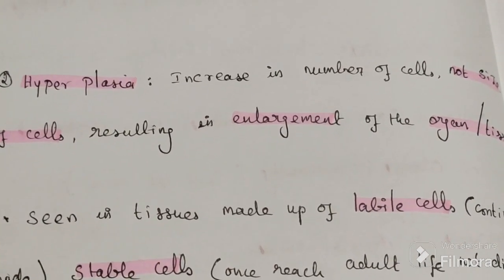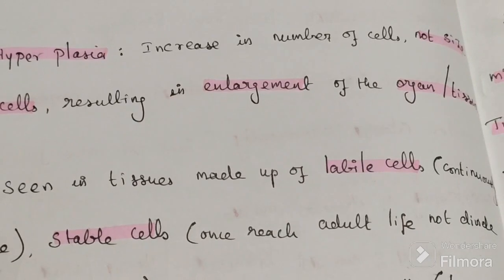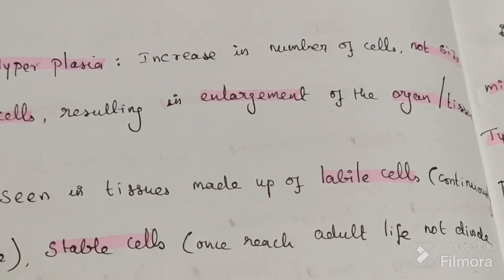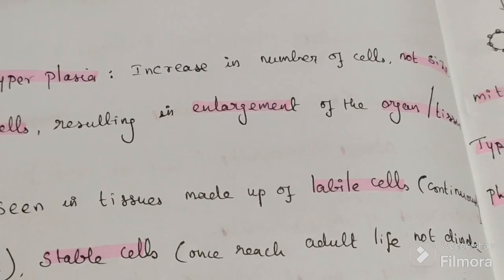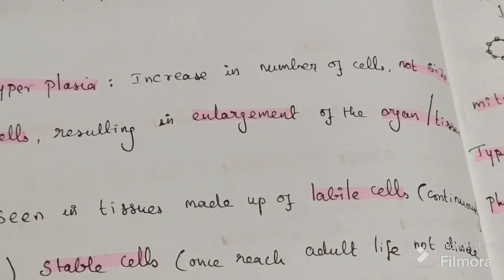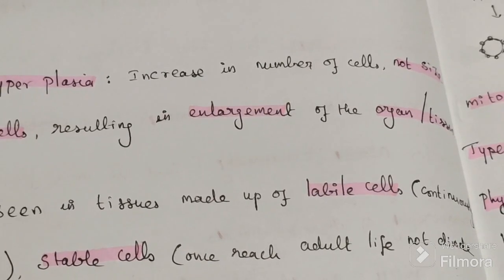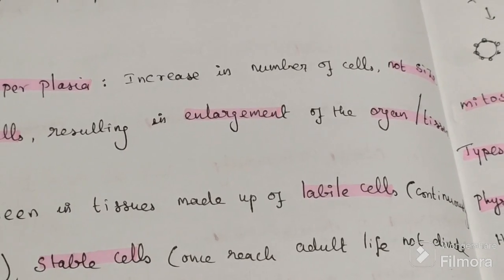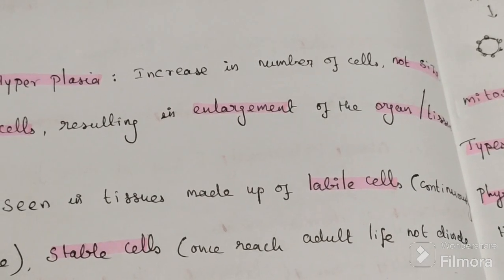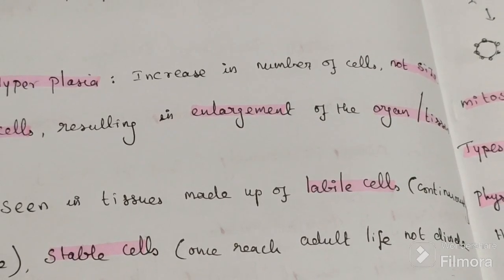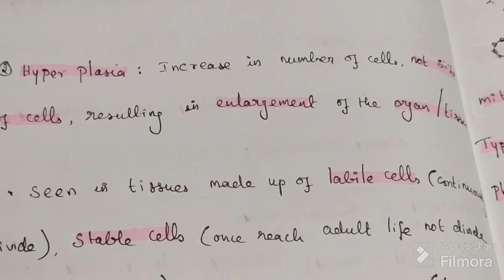Basically there are three types of cells. Labile cells are continuously dividing — for example, cells of the mucosa, bone marrow, intestinal lining, skin, and hematopoietic cells such as RBCs, WBCs, and platelets. These continuously dividing cells are called labile cells — they undergo mitosis and cell division.